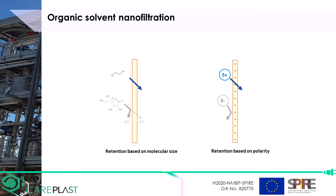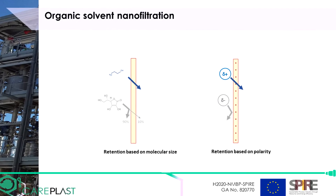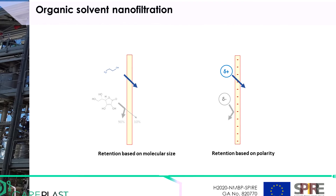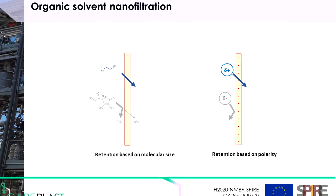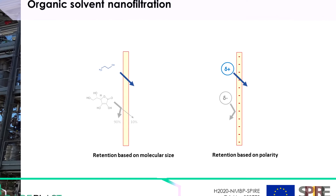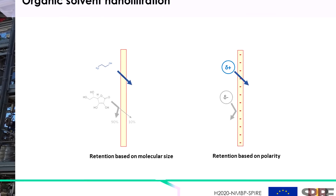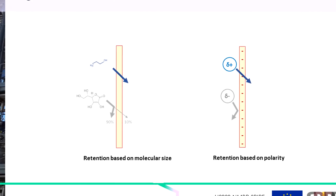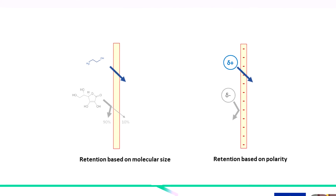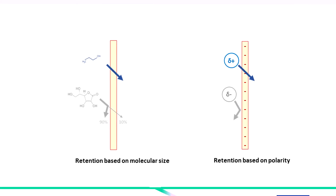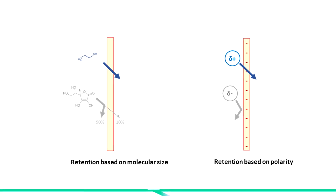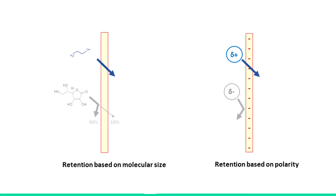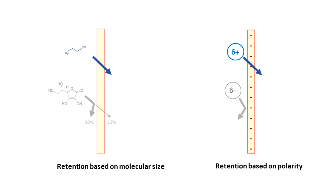An important concept in organic solvent membrane filtration is the molecular weight cut-off. This describes the retention capability of a membrane — the molecular weight at which the membrane has 90% retention. A molecular weight cut-off of 176 Dalton, the molecular weight of ascorbic acid, means that 90% of ascorbic acid molecules will be retained by the membrane, while 10% will be able to pass through. Smaller molecules will be able to pass through the membrane through size exclusion. Molecular weight cut-off is an important benchmark for which components will be able to permeate.